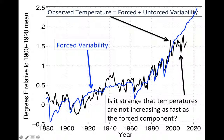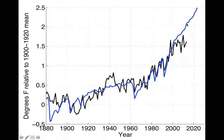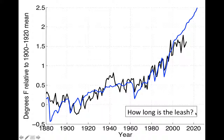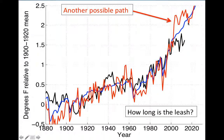Concerning the pause in global temperature, the question we want to ask is: is it strange that temperatures recently have not increased as fast as the blue line — the forced component — would suggest they should? We have a gap between where observations actually are and where the forced component says we should be. To evaluate how strange that is, we need to know how long the leash is — going back to the man-and-dog analogy — to see how far observed temperature can stray from forced temperature.